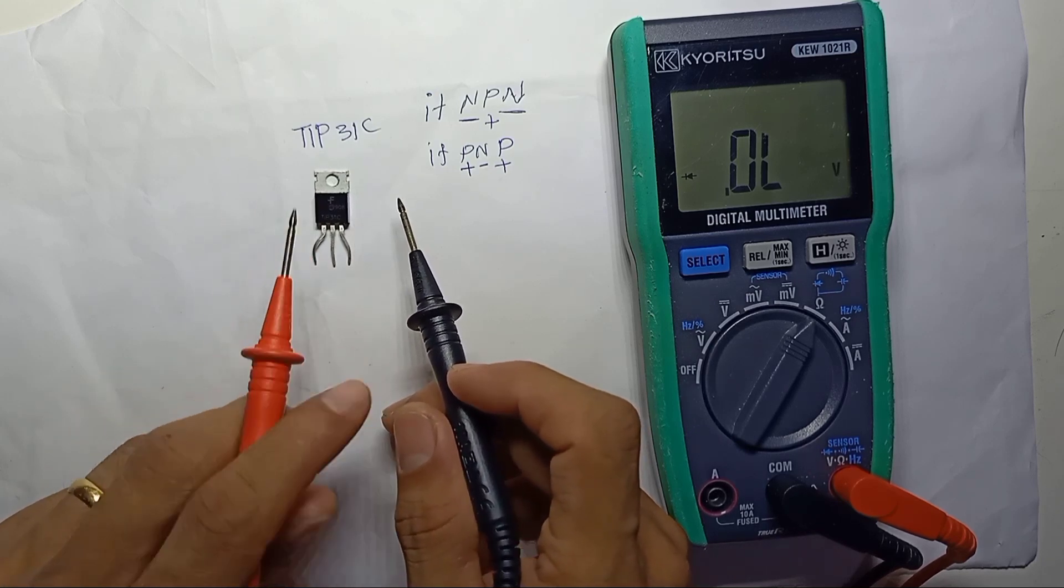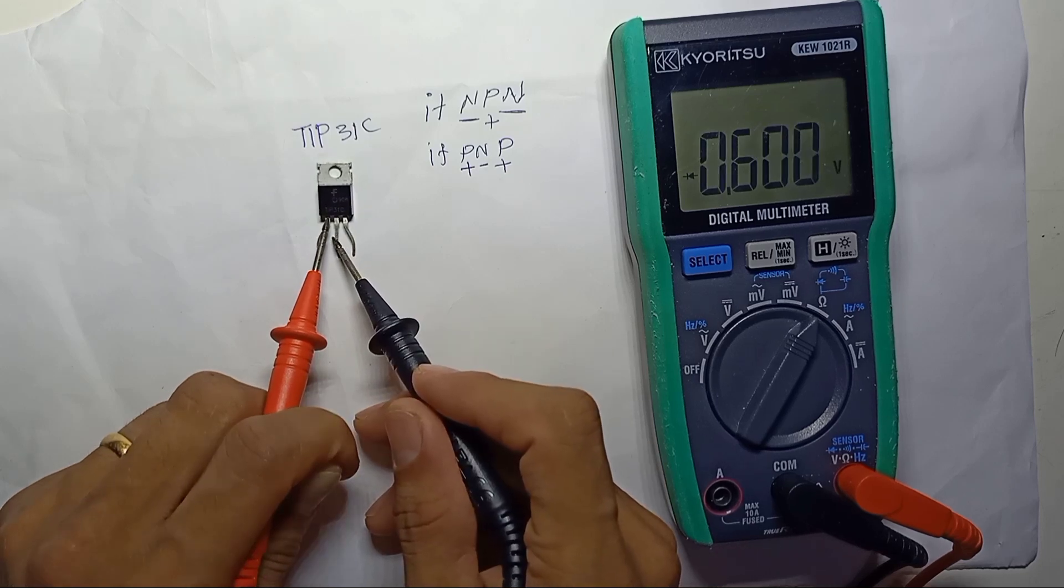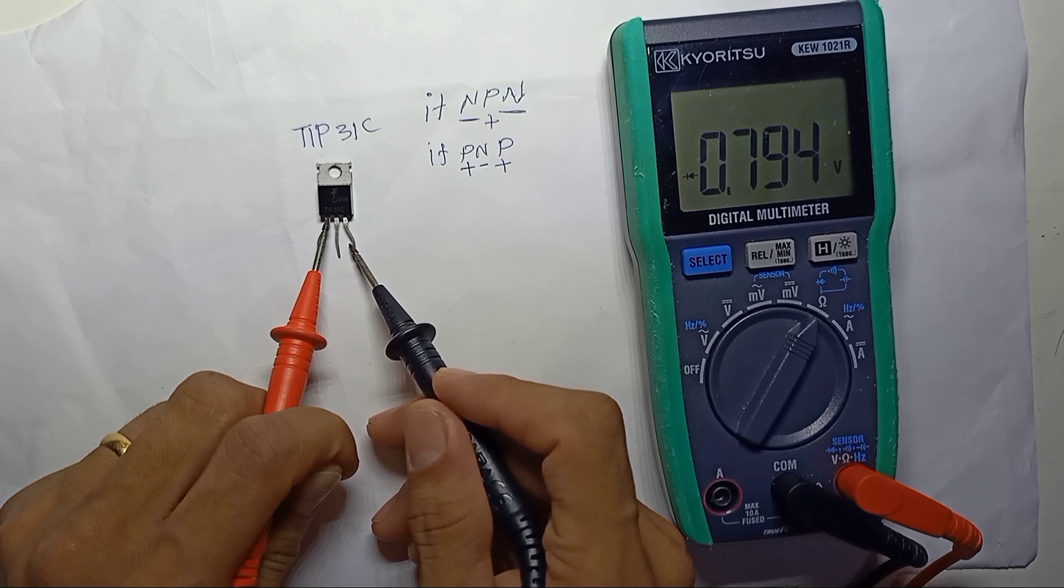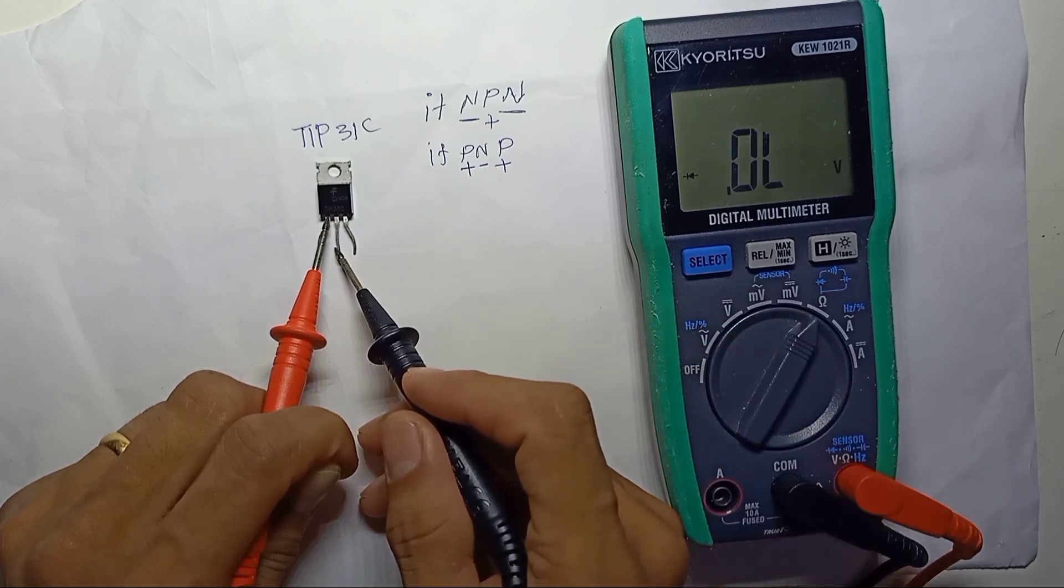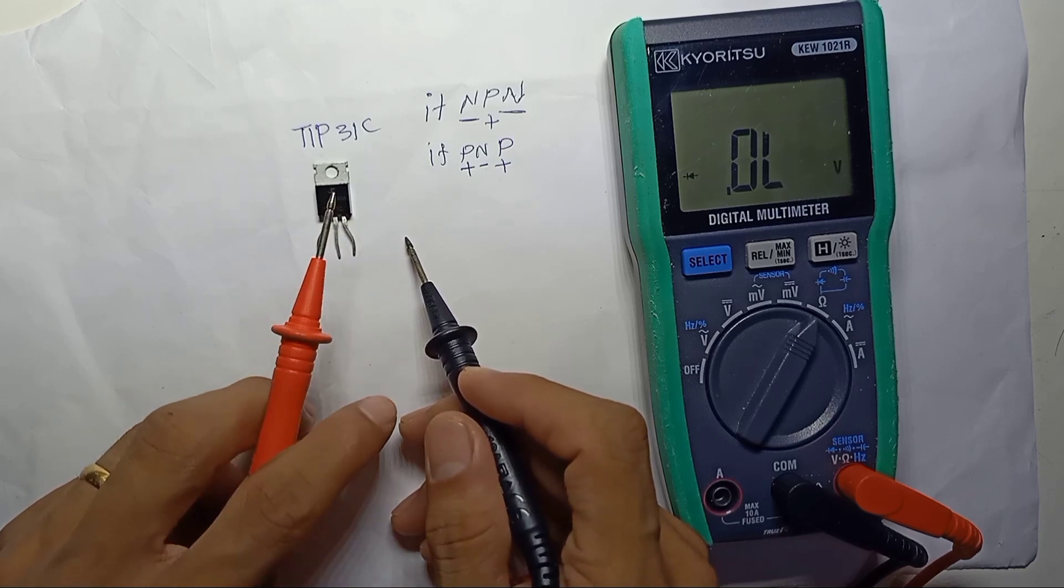So at first, red lead we place to the first pin. First pin to the second pin, black lead. First pin to the third pin, black lead. So all the diode voltages have dropped, which means the first pin is positive and this is base.